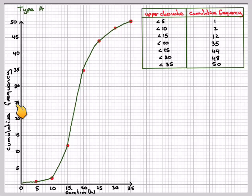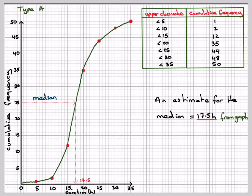And then to find the median, we take 25, we read along, and read down. And this time we get a median slightly less, which is 17.5. So an estimate for the median is 17.5 from the graph.